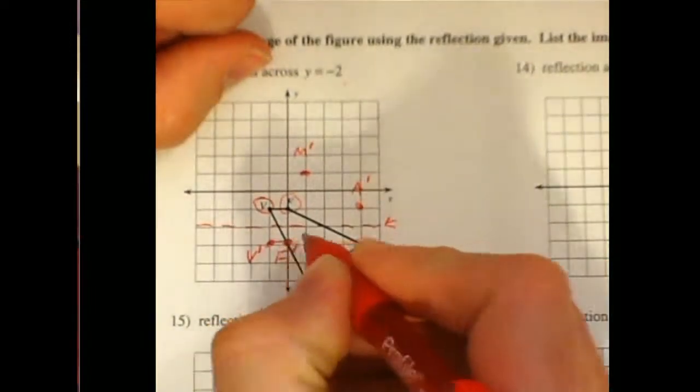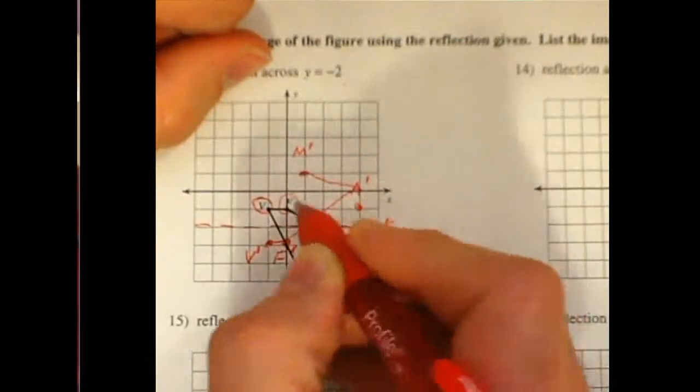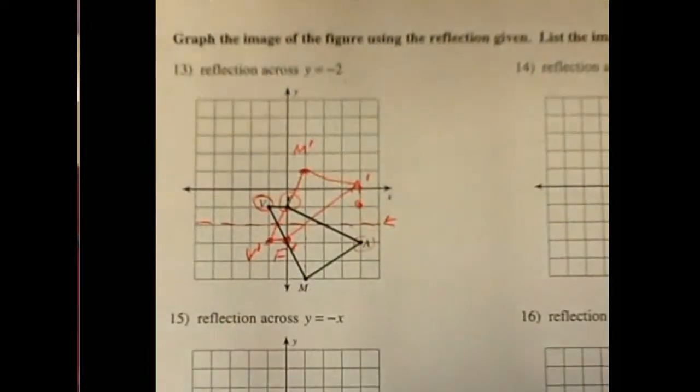So now I have my new shape that I can draw. We will do our best to draw this straight here. And now that is the same shape reflected over that line.